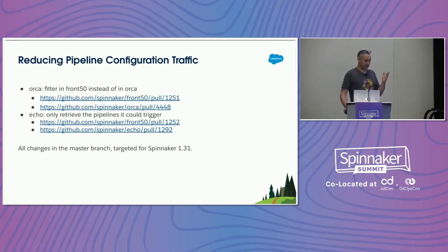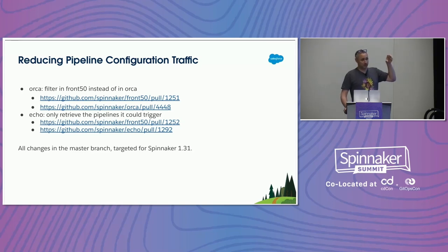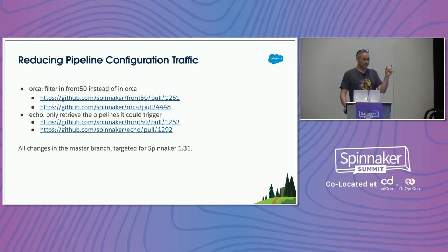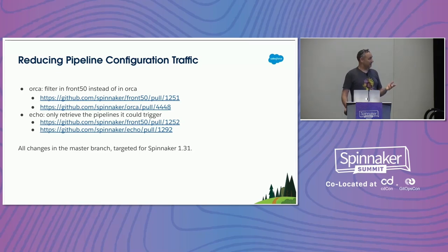Now the thing about manual execution: when you click the play button in the Spinnaker UI, it maybe doesn't feel like a trigger, but the UI calls through Gate to Echo which triggers the pipeline. If Echo doesn't know about every pipeline, it can't trigger every pipeline. It turns out Echo was already querying for one pipeline on manual execution — you know the ID of the pipeline you're executing, so only query for that one. You no longer need to query for all of them every 30 seconds.